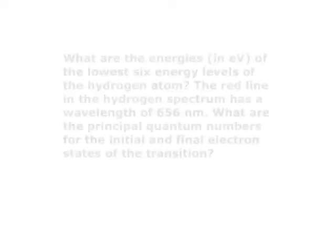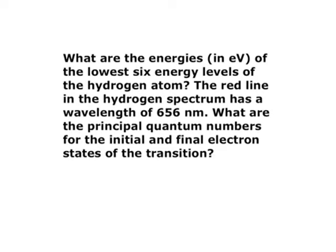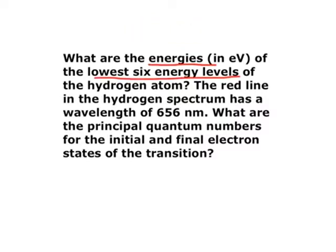Here's our problem. What are the energies in electron volts of the lowest six energy levels of the hydrogen atom? The red line in the hydrogen spectrum has a wavelength of 656 nanometers. What are the principal quantum numbers for the initial and final electron states of the transition? We have two parts: first, calculate the energies of the lowest six energy levels; second, find the principal quantum numbers for the transition corresponding to emission of a photon at 656 nanometers. We'll be working in electron volts, so we'll convert the photon energy to electron volts.